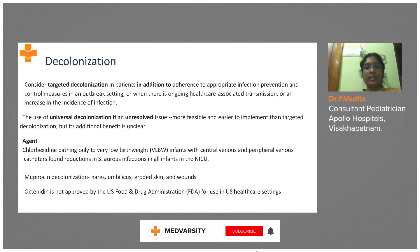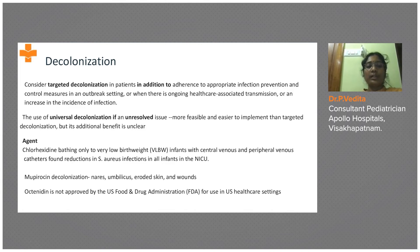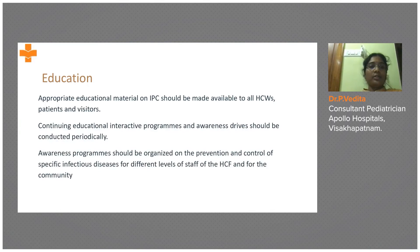For targeted decolonization, the agent used is chlorhexidine — applied to the anterior nares thrice daily, and also to the umbilicus, eroded skin, and wounds. This is used for very low birth weight babies and those with central or peripheral venous catheters. Another agent is octenidine, but it is currently not approved by the USFDA.